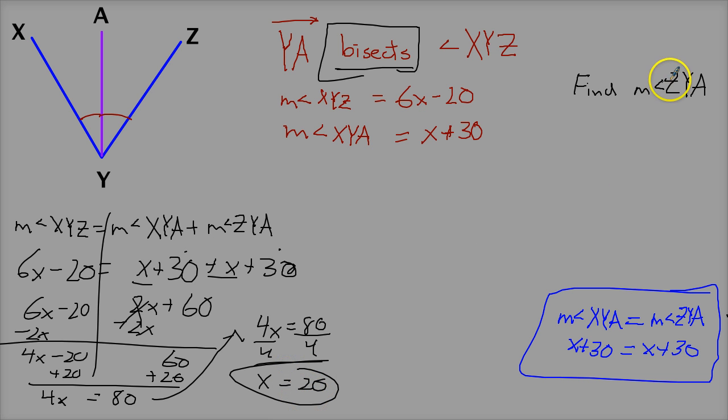Now I can take this information and find my final value. I know that the measurement of ZYA is equal to X plus 30.